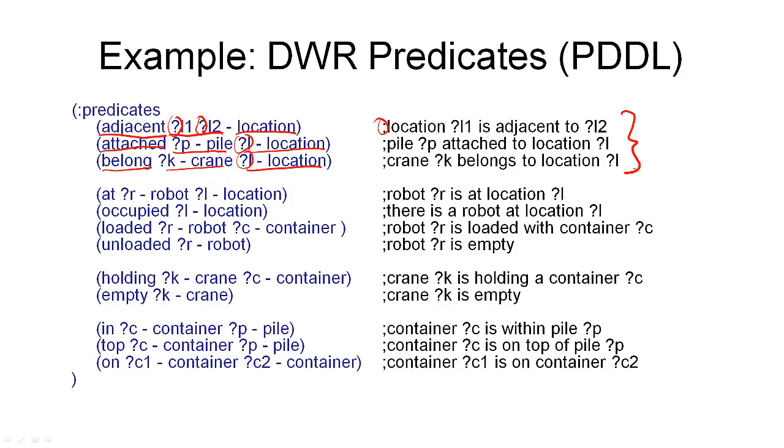One thing that is special about these relations is that they are static. That is, once they are defined for a specific state, they will never change from state to state. Locations are adjacent, they will always be adjacent. There's no action that can change that. The other relations here are known as dynamic or fluent relations, because they can change from state to state.